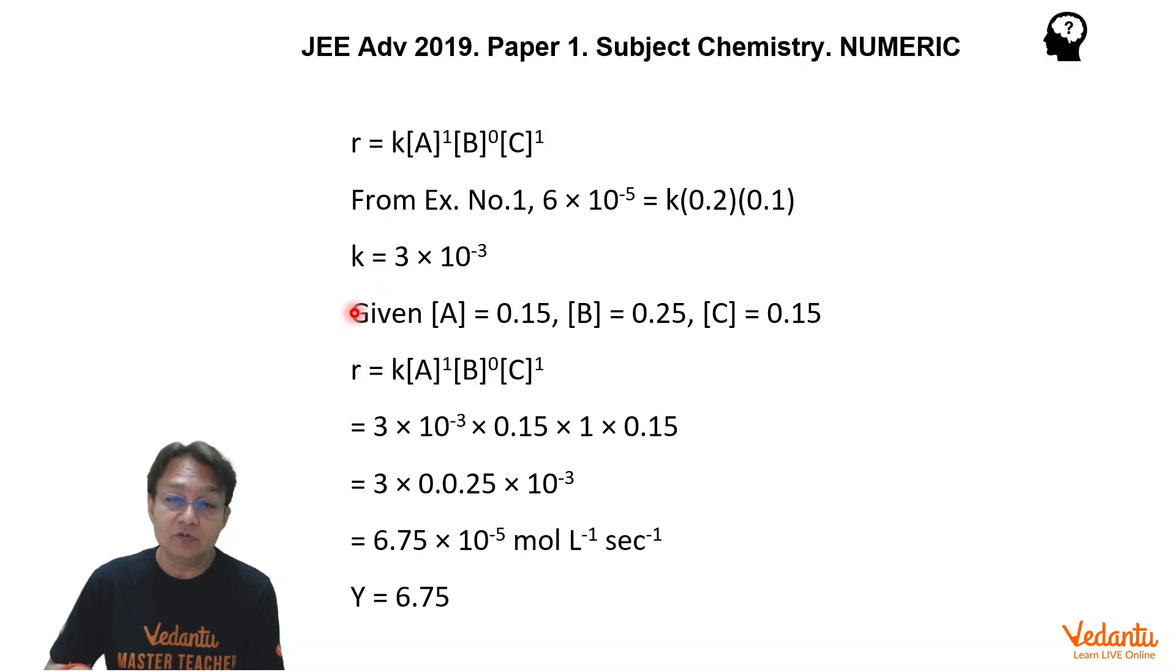And once we find the value of K, it is given that A equals 0.15, B equals 0.25, and C equals 0.15. In these situations, the rate becomes 3 into 10 to the power of minus 5 into 0.15 into 1 into 0.15.